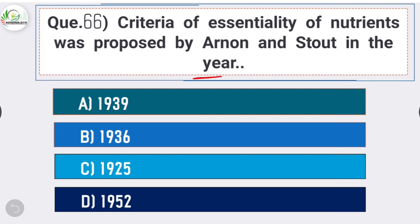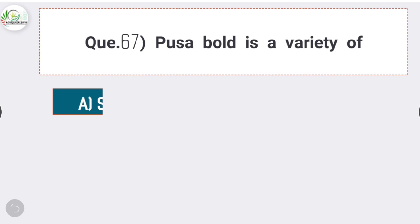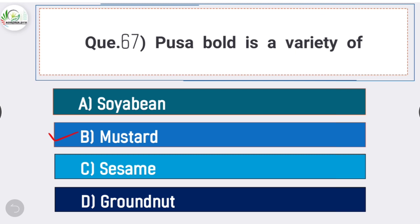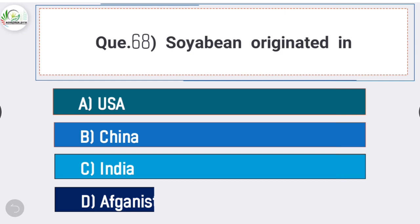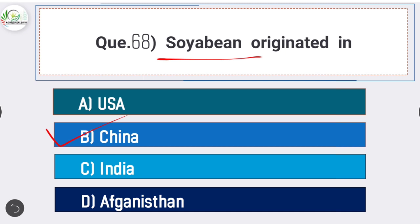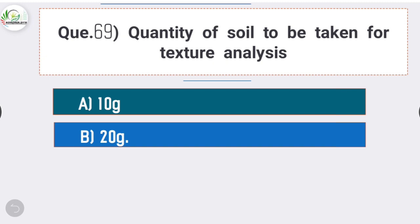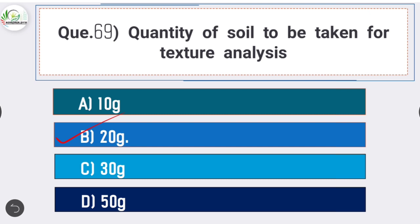Question number sixty-six: criteria of essentiality of nutrients was proposed by Arnon and Stout in the year - answer is option A - 1939. Question number sixty-seven: Pusa Bold is a variety of - answer is option B - mustard. Question number sixty-eight: soybean originated in - answer is option B - China. Question number sixty-nine: quantity of soil to be taken for texture analysis is - answer is option B - 20 grams.